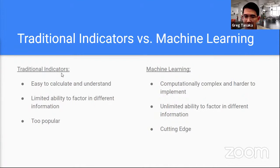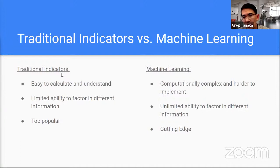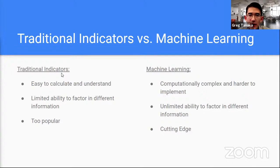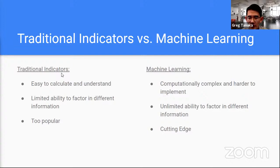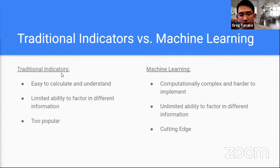On the other hand, machine learning is computationally complex and much harder to implement. It's also harder to understand what's going on — it's more black box. As a result, a lot of institutions do not use machine learning because of that. But the real big advantage of machine learning is that you have just about unlimited ability to factor in different information — what people are talking about on WallStreetBets, what's happening on CNN, what's going on on Twitter. Traditional indicators are just taking historical price and doing some simple average, so it's really hard to extract predictive information with them.